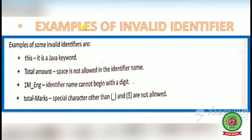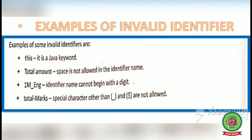Now see examples of invalid identifiers. Number 1: 'this' — it is a Java keyword. You cannot use a Java keyword as an identifier. For example, writing 'public class static' or 'public class int' is invalid because 'static' and 'int' are keywords. Number 2: 'total amount' — a space is not allowed in an identifier. Instead, you can write 'totalAmount' or 'total_amount'.